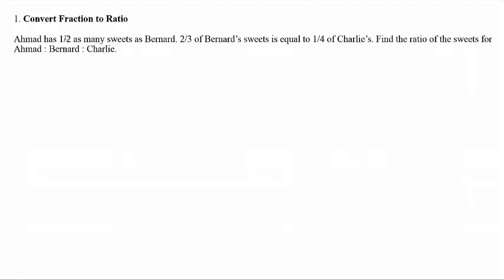We are given fractions and we need to convert these fractions into their respective ratio. When we say Ahmad has half as many sweets as Bernard, it means Ahmad is the numerator, which is 1 unit, and Bernard is the denominator, which is 2 units. So the ratio between Ahmad and Bernard is equal to 1 is to 2.